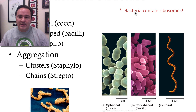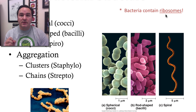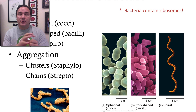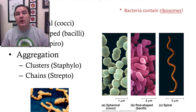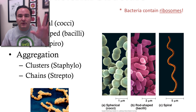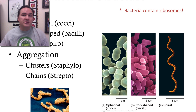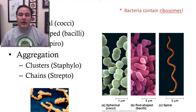Bacteria contain ribosomes — organelles that are able to read the genetic message and produce proteins. All bacteria contain ribosomes; it's essentially the only organelle they have. The DNA sits loosely inside the cytoplasm of the cell. There is no nucleus, no Golgi apparatus, and none of the other organelles we see in animal and plant cells.